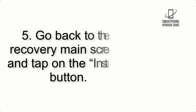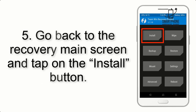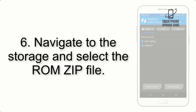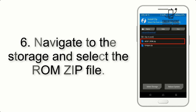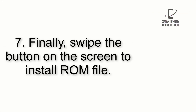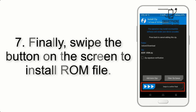Step 4: Swipe the button to wipe the device. Step 5: Go back to the recovery main screen and tap on the Install button. Step 6: Navigate to the storage and select the ROM zip file.